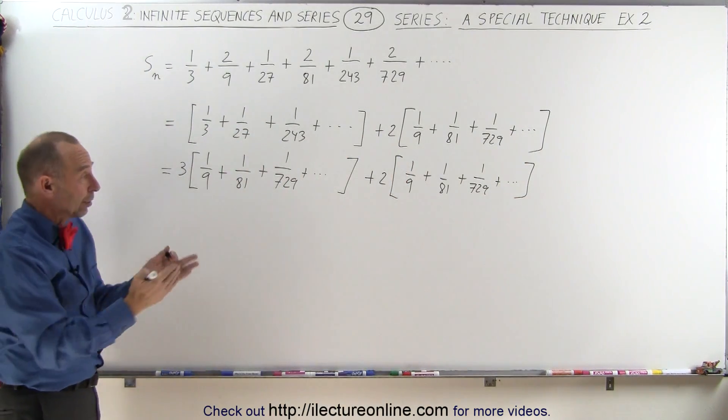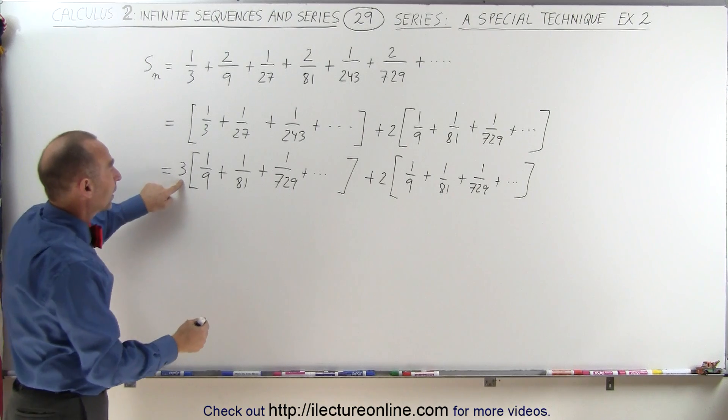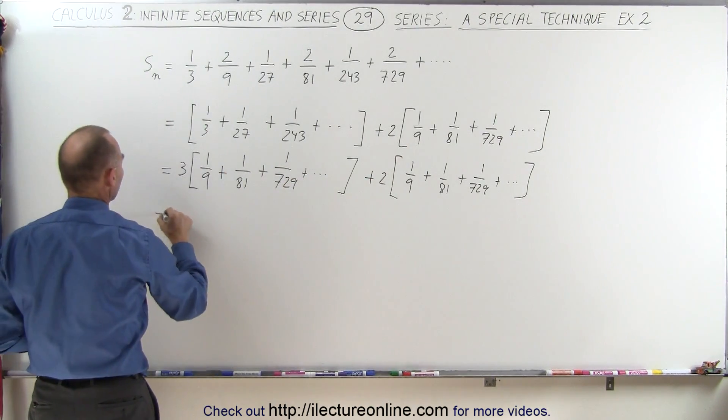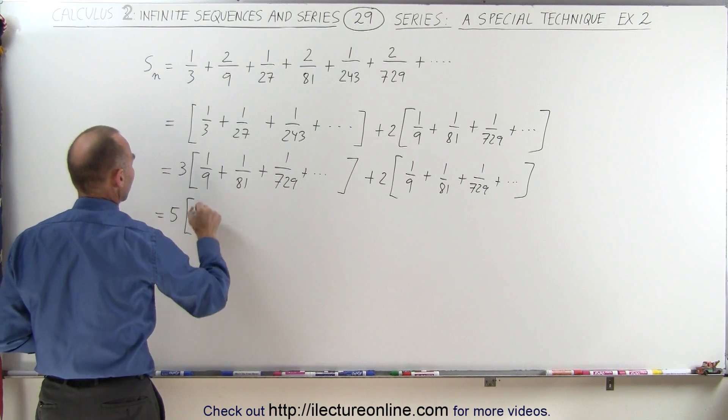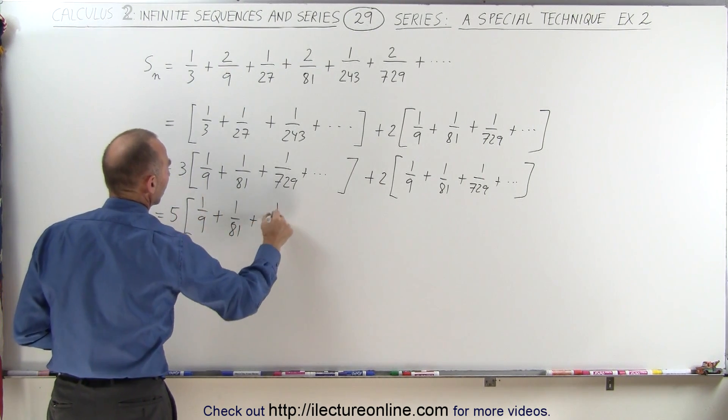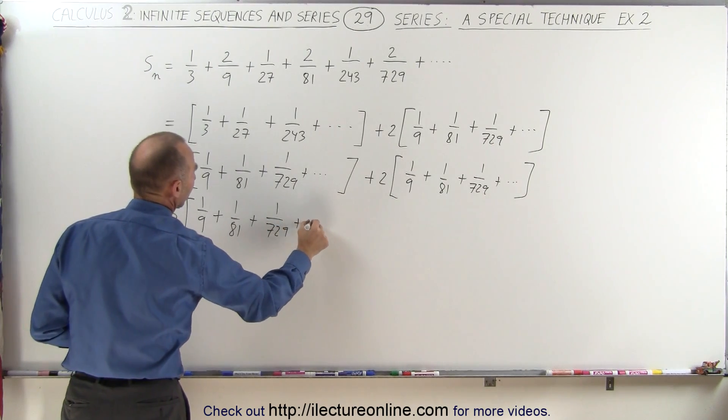Next you see that they look identical now except this is multiplied times 2. I can add them together so this becomes 5 times (1/9 + 1/81 + 1/729 + and so forth).